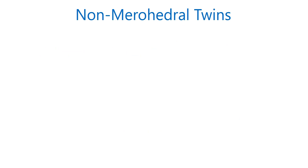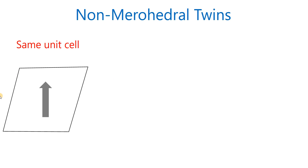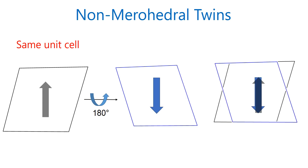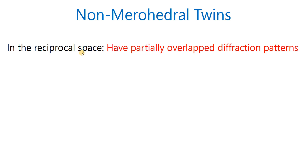Then what is a non-merohedral twin? They have the same unit cell. For example, this is one unit cell. If you rotate this unit cell by 180 degrees, then you will get this unit cell, and overall we have this type of unit cell in a twin crystal. In the reciprocal space, they have a partially overlapped diffraction pattern. So non-merohedral twins have partially overlapped diffraction pattern.